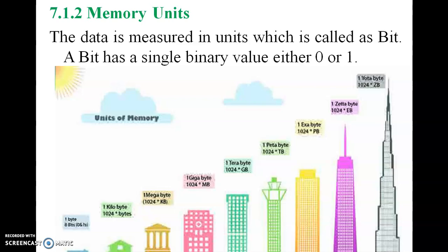Next we are going to see what are memory units. The data is measured in units called bits. A bit has a single binary value, either zero or one. One byte has eight bits. 1024 bytes equals one kilobyte. 1024 kilobytes equals one megabyte. Similarly it goes on: one terabyte, one petabyte, and so on.